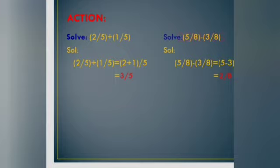Now subtraction: 5/8 minus 3/8. The denominator is the same, so we subtract the numerators. 5 minus 3 divided by 8 equals 2/8. You can also simplify this to its simplest fraction form.